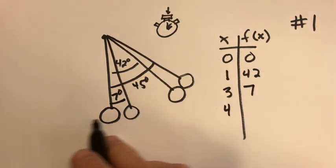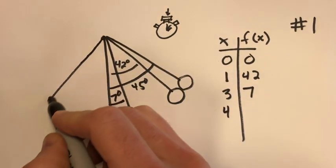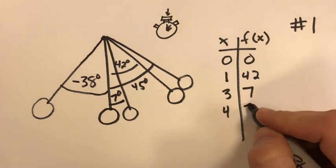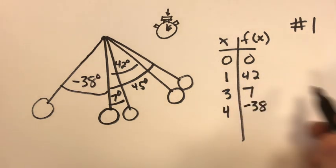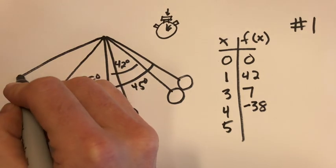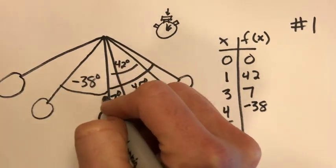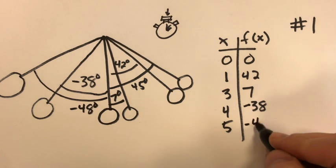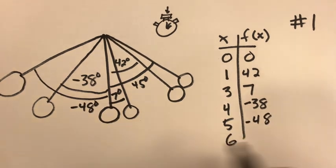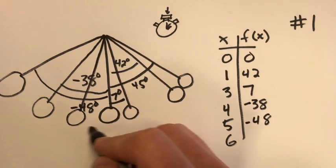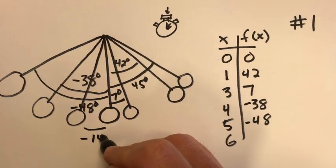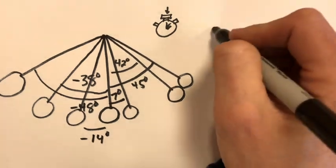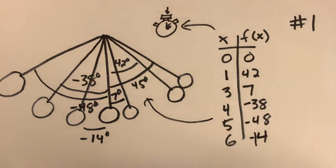After four seconds it's swung all the way back over here, negative 38 degrees. After five seconds it continues to swing all the way up here at negative 48 degrees, and after six seconds it's back to here, negative 14 degrees. So if x is the time in seconds and f(x) is that swing angle.